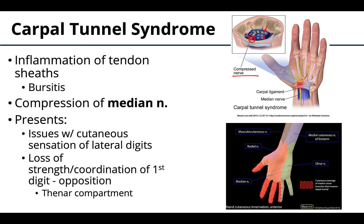Carpal tunnel syndrome can present as tingling or diminished or even completely absent sensation in the lateral 3.5 digits — digit one is the thumb, then two, three, and a bit of digit four. It does not typically affect sensation over much of the palm; some branches may extend a little further, so think more in terms of the proximal palm. Importantly, the skin over the thenar eminence would typically not be affected, unless you had a high median nerve lesion proximal to the carpal tunnel.